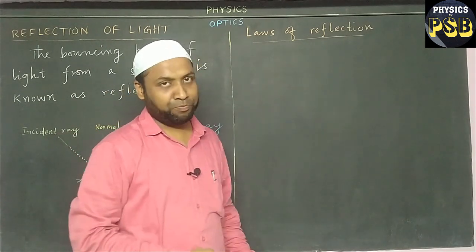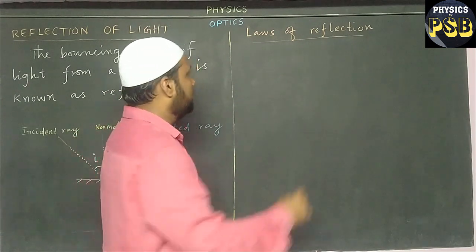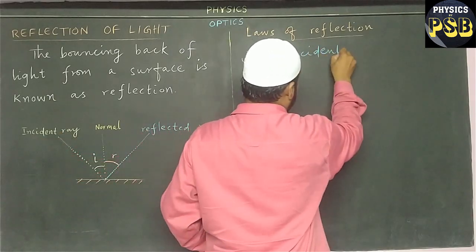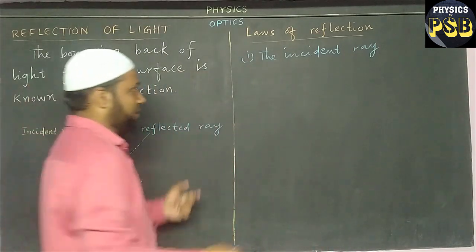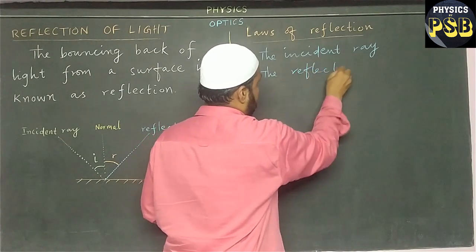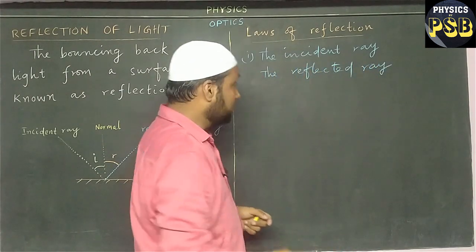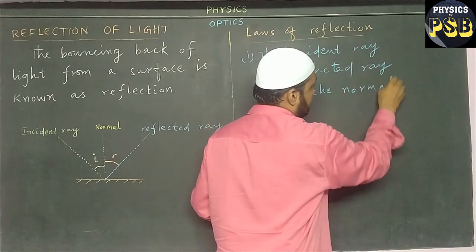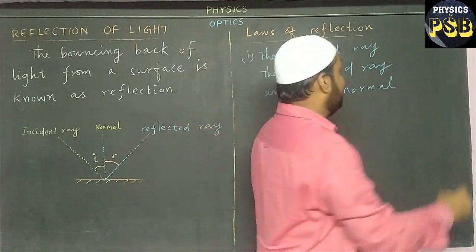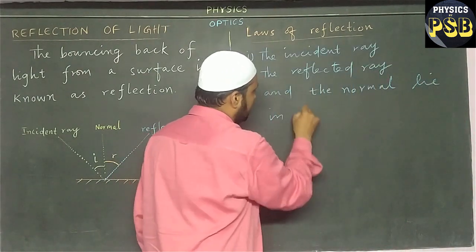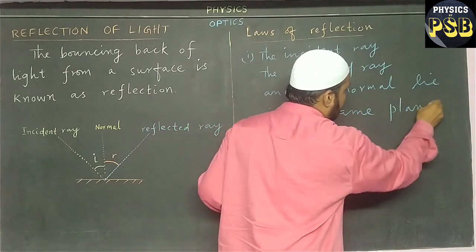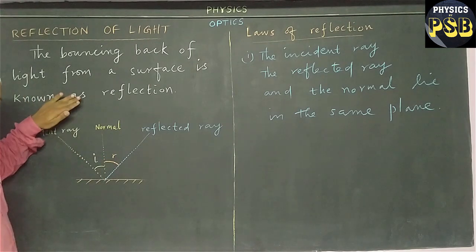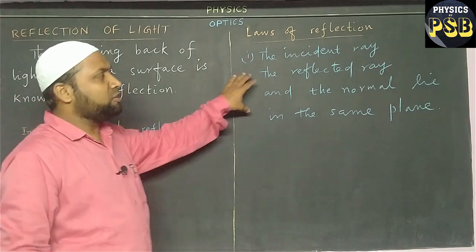Now, let me explain what laws of reflection say. The first law of reflection says that the incident ray, the reflected ray, and the normal all of them lie in the same plane. It is obvious from the diagram. You can see, incident ray, reflected ray, and the normal all of them lie in the same plane. This is known as the first law of reflection.